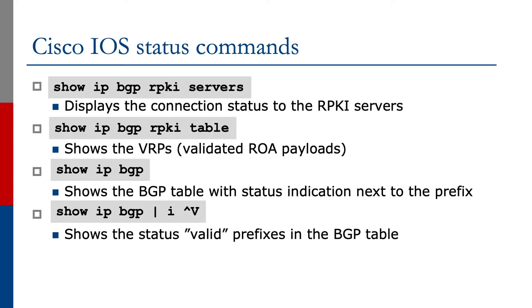We then have various status commands. You can display the connection status to the RPKI servers and show the actual VRPs. The VRP is a validated ROA payload — in other words, it's the ROAs that have been downloaded from the cache. The show IP BGP command shows the BGP table, but now includes a status indication next to the prefix, with one extra character column indicating the validation status. You can use the search command on the IOS command line, looking for the V that appears in the BGP table.